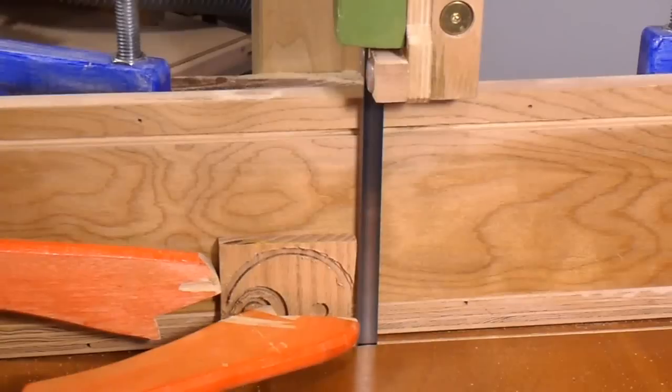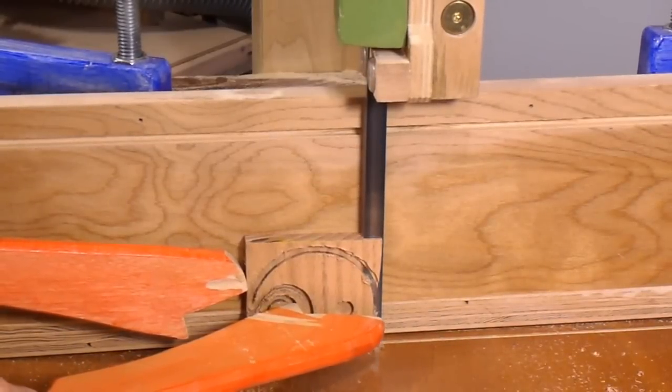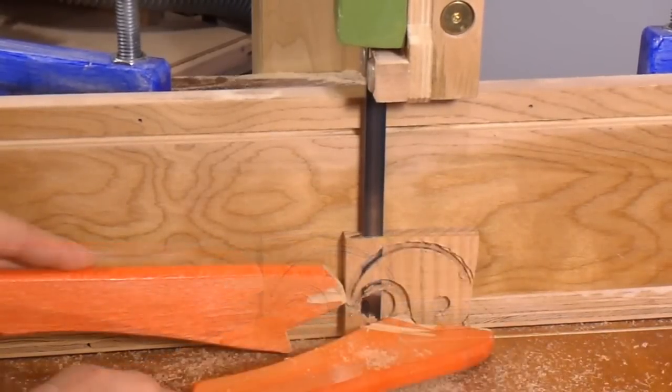Here I cut the outline of my inlay. Next, I'm using the band saw to cut this inlay piece off of its backing so I can actually inlay it into the piece of wood.